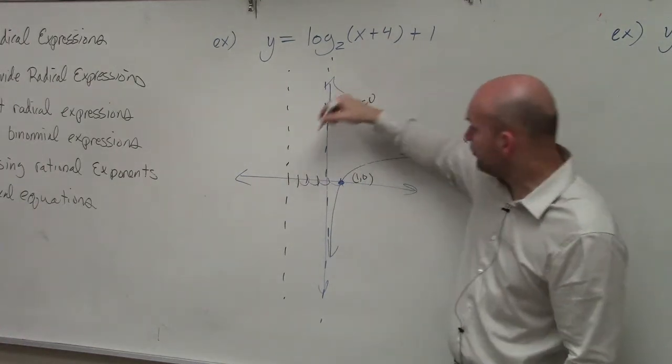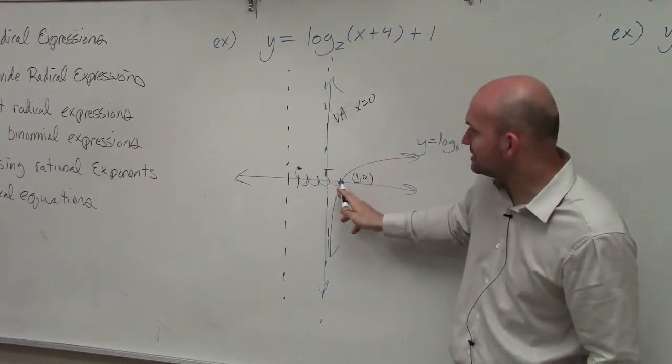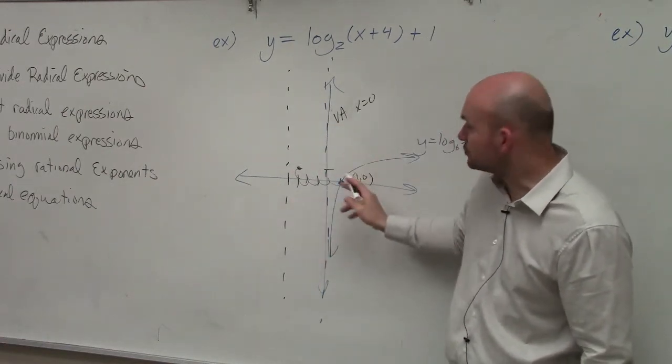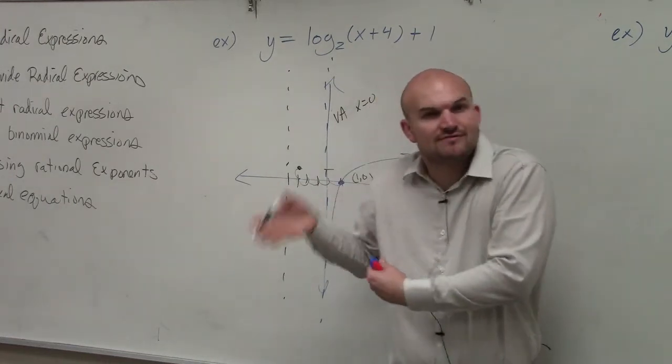Then we go up 1. So now, basically, all I'm going to do is redraw this graph from my new point, which has been shifted 4 units to the left, up 1 unit.